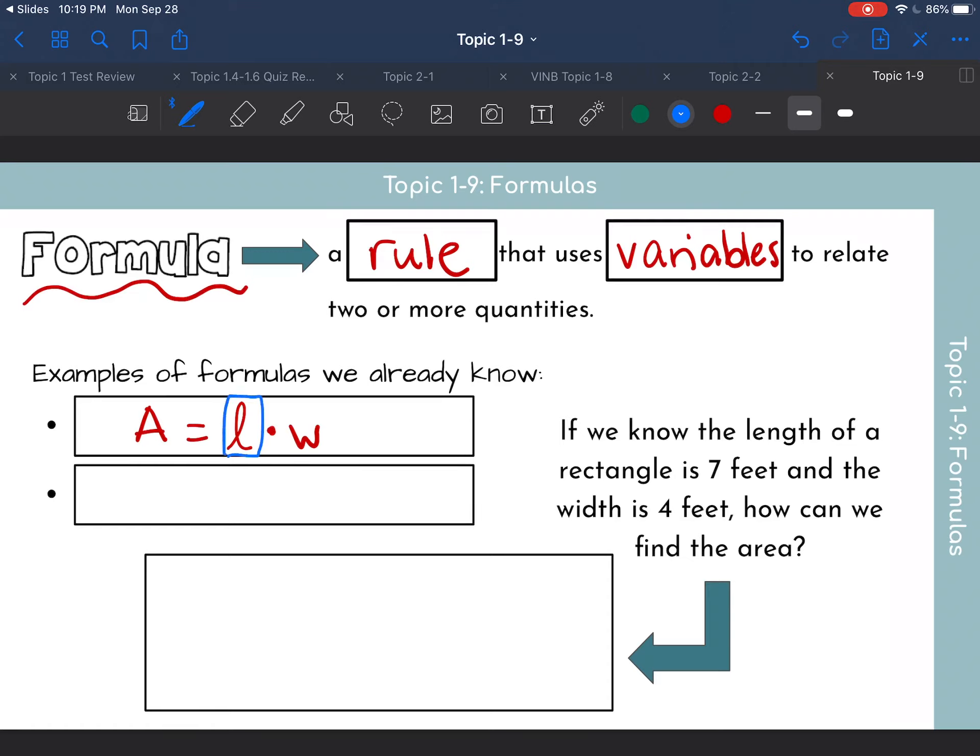Again, we're using variables. And it's basically a rule and we plug in our length, we plug in our width, and we can get the area. Another formula is the perimeter formula, which is very similar to that. But to find the perimeter,